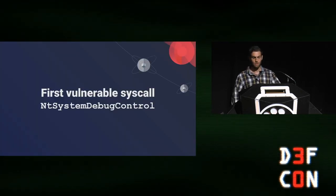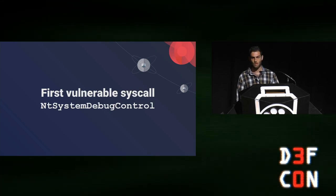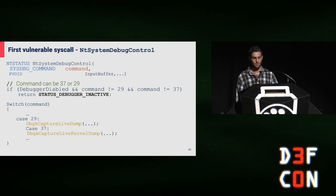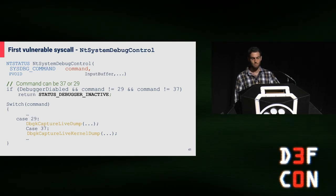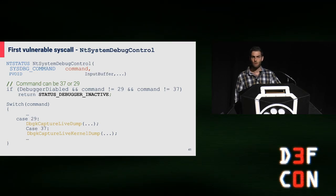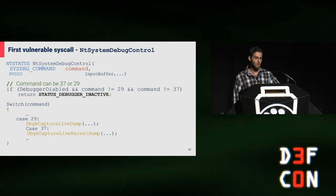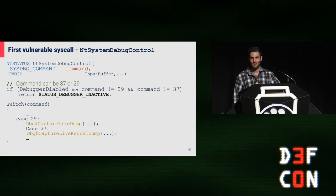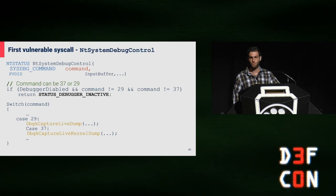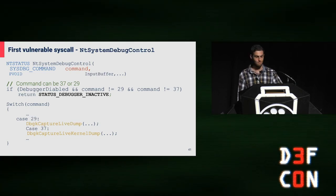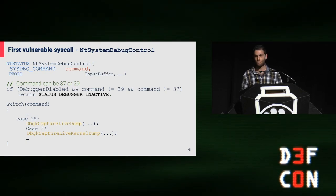An additional interesting syscall that matched the pattern was NtSystemDebugControl, which sounds much better. NtSystemDebugControl is similar to the previous function — it's huge and enumerates over the enum SysDebugCommand. This syscall calls multiple interesting functions, for example enabling the kernel debugger. But all these options were disabled if the kernel debugger is not enabled. All of them except two: user dump — which won't give actual value since I need a handle to a process I can only open inside the container — and kernel dump, which sounds much more interesting.